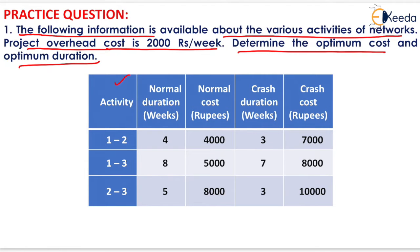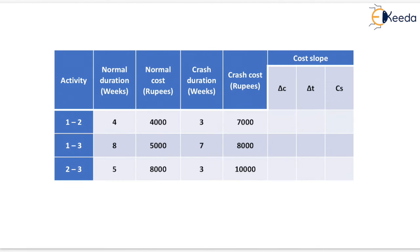In the table, activity is given along with normal duration in weeks, normal cost in rupees, crash duration in weeks, and crash cost in rupees. To solve this question, we first need to find the cost slope, for which we need to find delta C, delta T, and the cost slope value.